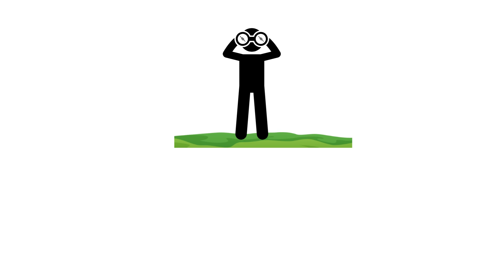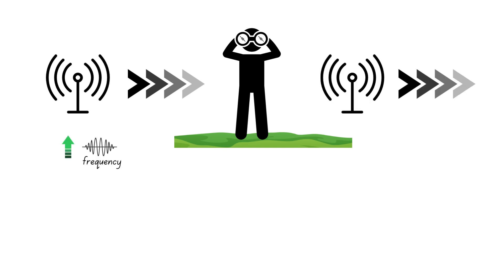For simplicity, let us assume the observer is standing still on the Earth. If the source is moving towards the observer, then the frequency increases. If the source is moving away from the observer, then the frequency decreases.